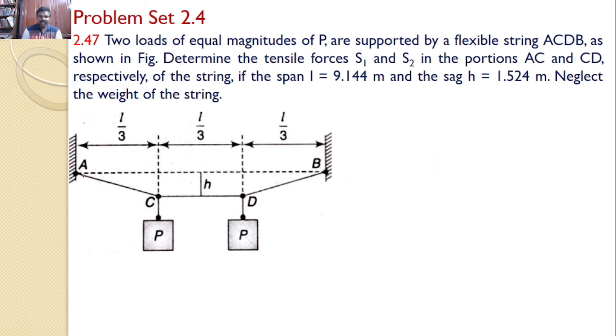Initially the ACDB string is like this. We have attached a weight P here and weight P here. Because of these weights, this string is displaced like ACDB as shown. Our interest is to find the tension force in string AC and the tension force in string CD.